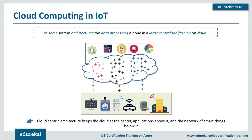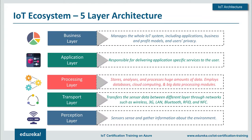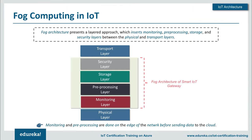Processing can be divided into two segments: cloud computing-based processing and fog computing. In cloud computing, information is passed to the cloud platform which processes it — suitable for systems that don't require immediate action but need large-scale processing. For systems requiring immediate response, fog computing is used. Fog computing represents a layered approach inserting monitoring, pre-processing, storage, and a security layer between the physical and transport layers.